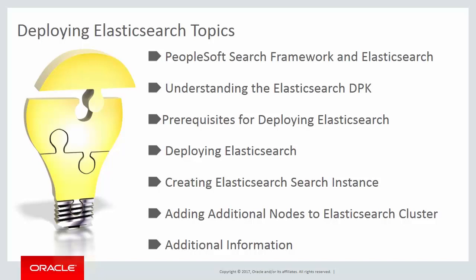In the Prerequisites for Deploying Elasticsearch topic, we'll talk about the hardware and software requirements and recommendations. In the Deploying Elasticsearch topic, we'll describe the deployment process, the individual deployment steps, and the resulting file structure. The Creating Elasticsearch Instance topic takes you through configuring PeopleSoft Search Framework with Elasticsearch using the ACM plugins and PIA. At deployment, the Elasticsearch DPK creates a single node. The Adding Additional Nodes to Elasticsearch Cluster topic guides you through the steps of setting up additional nodes for the purpose of failover.